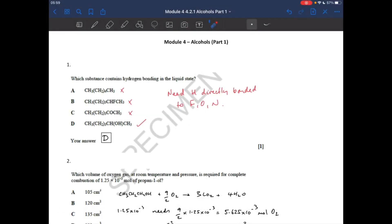So question one, which substance contains hydrogen bonds in the liquid state? Well you can see I've written there, we need a hydrogen directly bonded to a fluorine, oxygen, or nitrogen. You've got that going on in D, so that was the answer.